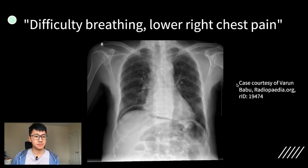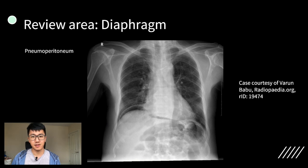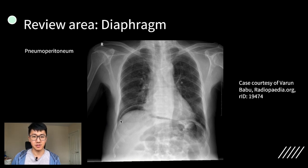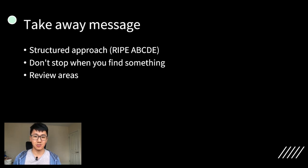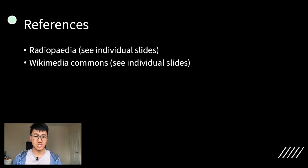Now try this one. Another really important review area to check is below the diaphragm. Under the right hemidiaphragm you can see a rim of air, and that's consistent with a pneumoperitoneum. In this patient, you'd be really worried about some kind of bowel perforation. So the take-home messages here are to always have a structured approach, don't stop when you find something, keep looking for the other associated findings, and always, always check your review areas. If you have any questions, leave them in the comments. Like and subscribe for more and I'll see you next time.